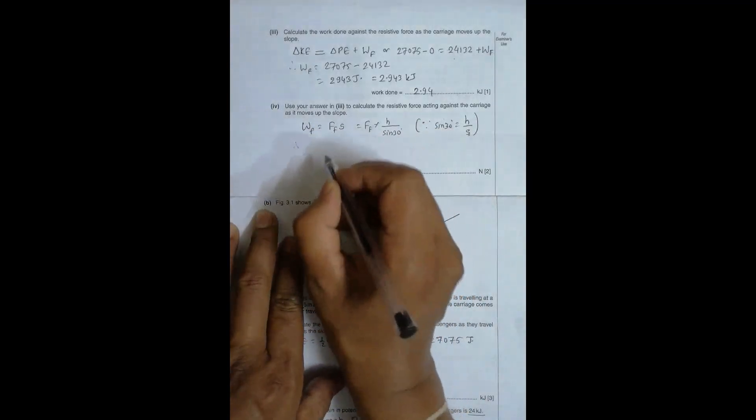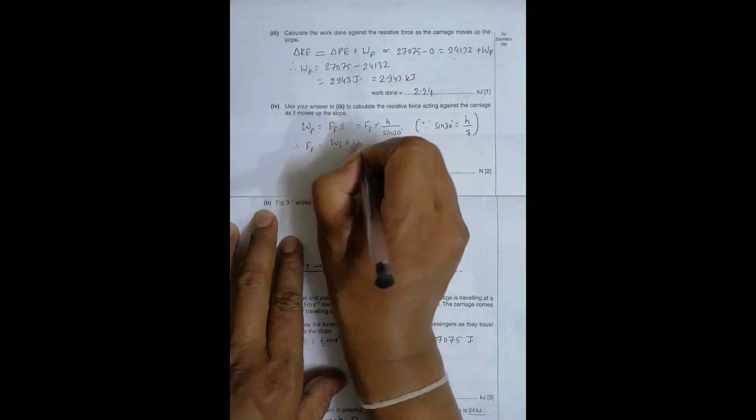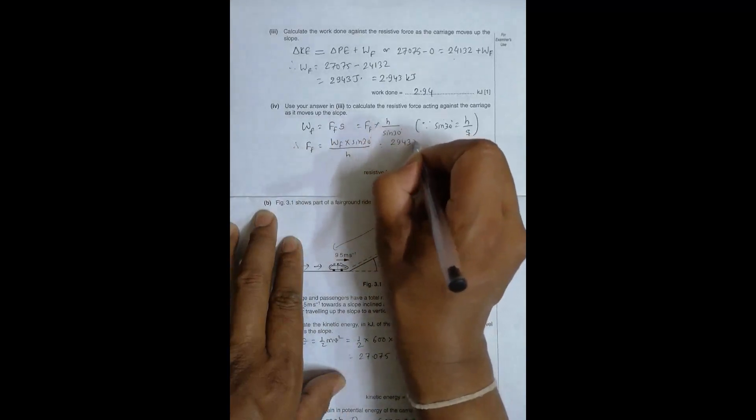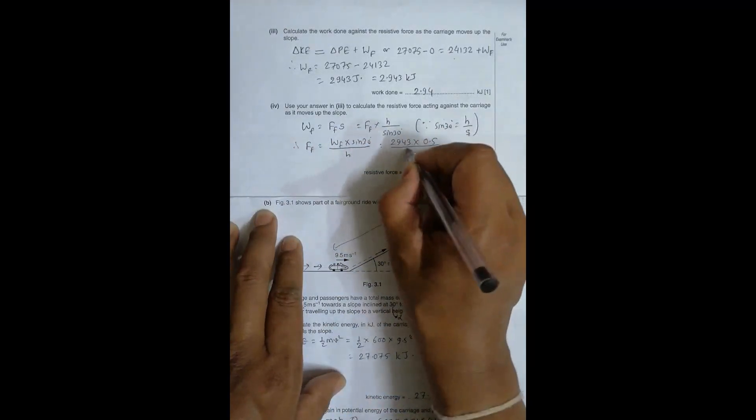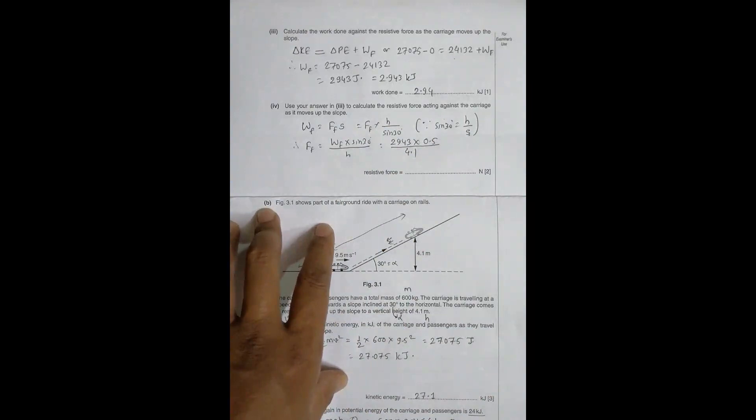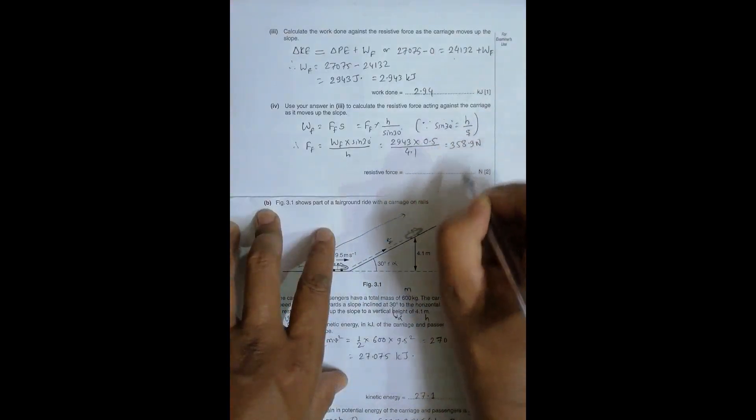WF is equal to 2,943 × sin(30°), which is 0.5, divided by h which is 4.1. Let me do it in the calculator: 2,943 × 0.5 ÷ 4.1 equals 358.9 newtons.